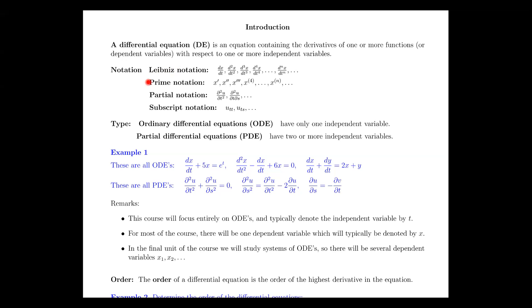We also have prime notation. If we understand what variable we are deriving with respect to already, and that is clear, then we can use prime notation: x prime for the first derivative, x double prime for the second derivative, and so on.